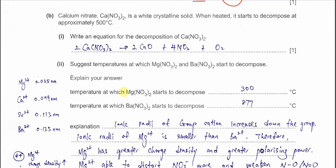Part B: calcium nitrate is a white crystalline solid that decomposes when heated at about 500°C. For part one, write an equation for the decomposition of calcium nitrate. Calcium nitrate forms calcium oxide as the white residue, plus brown NO₂ gas and oxygen gas. The ratio is 2:4:1.